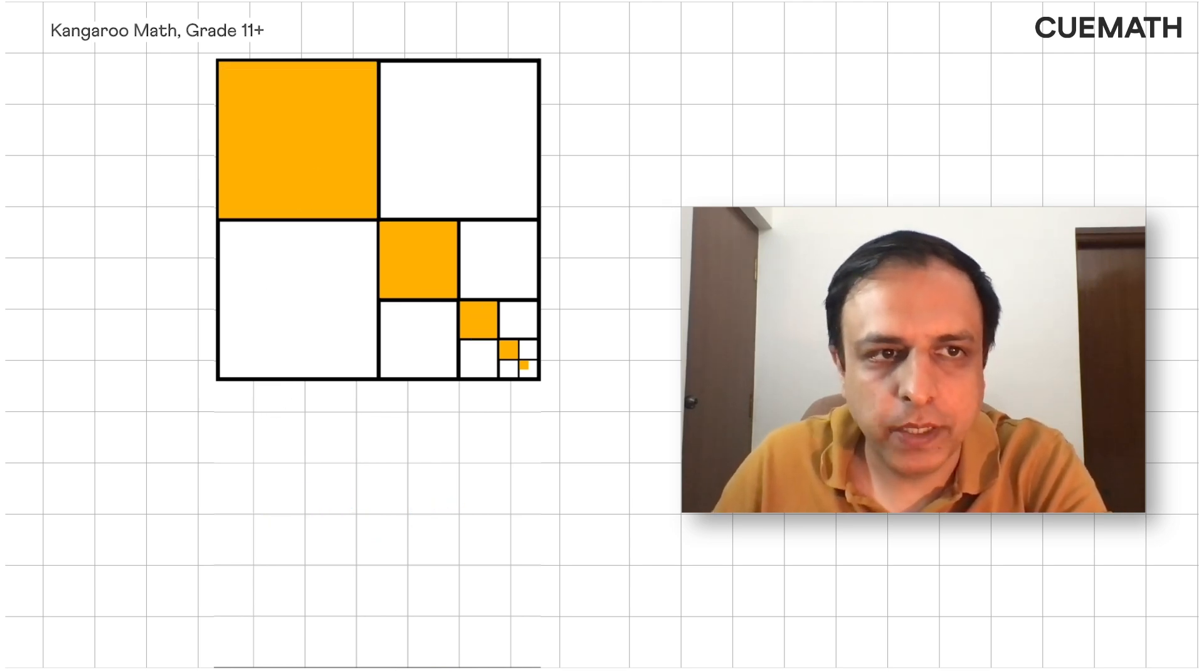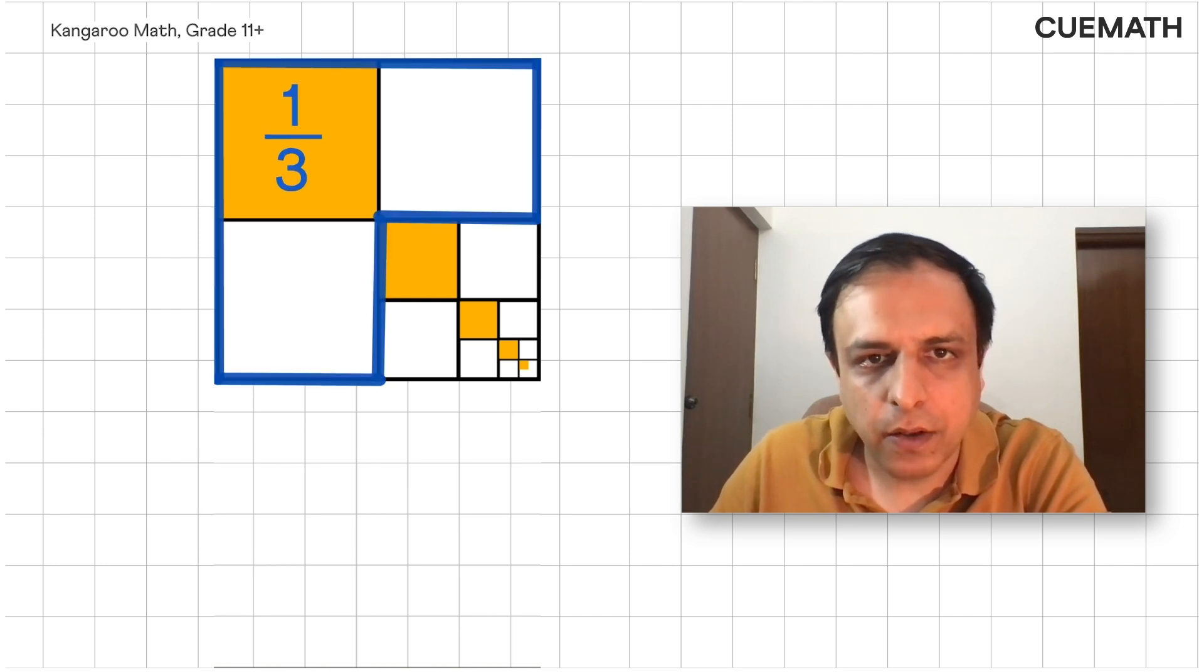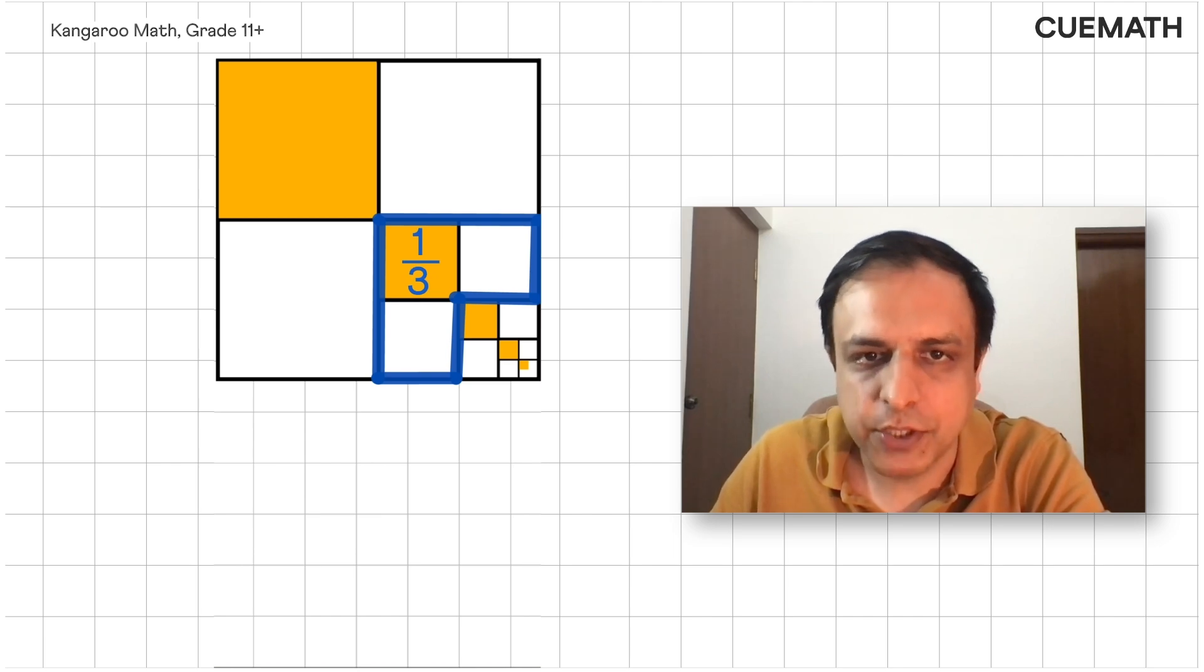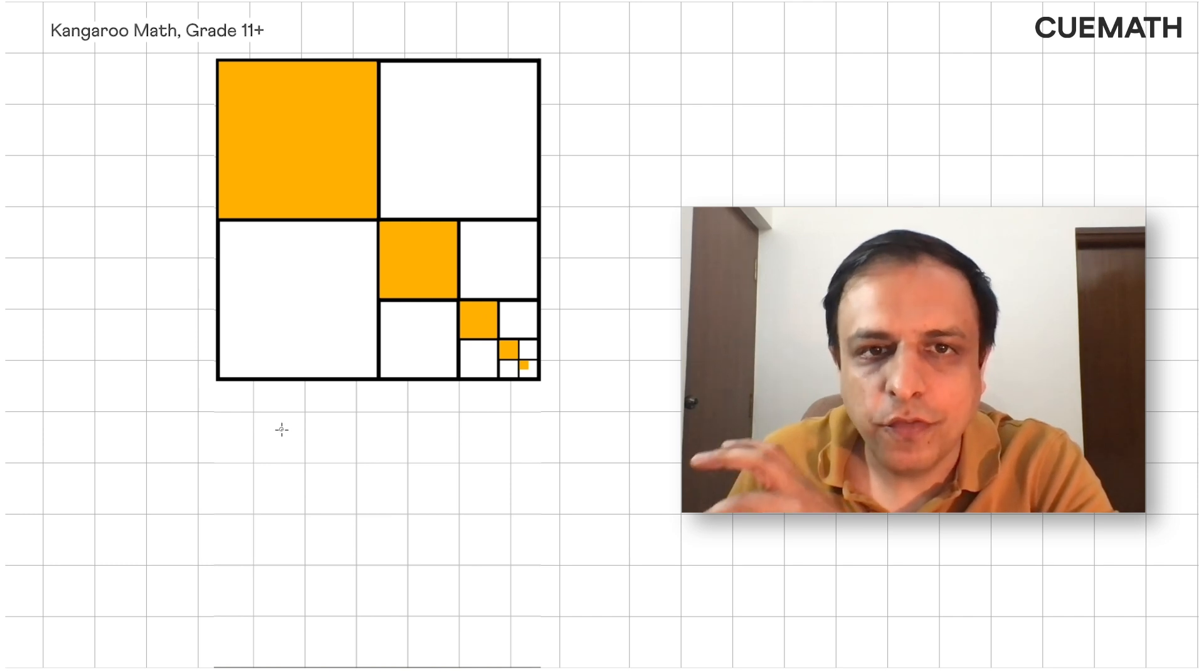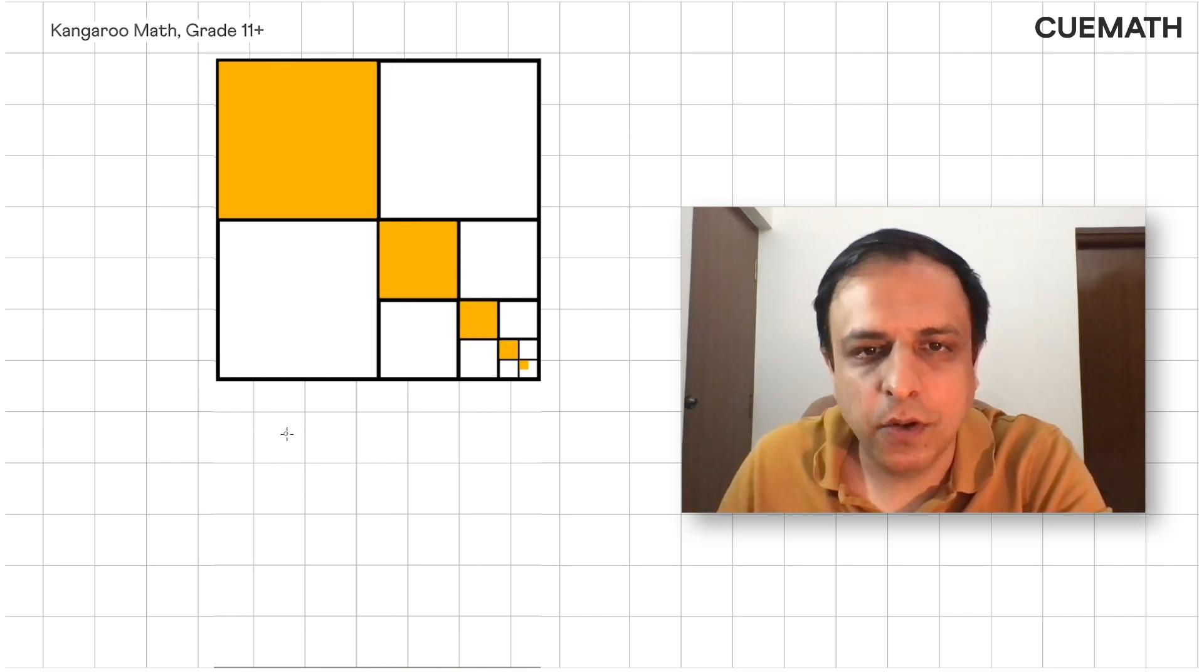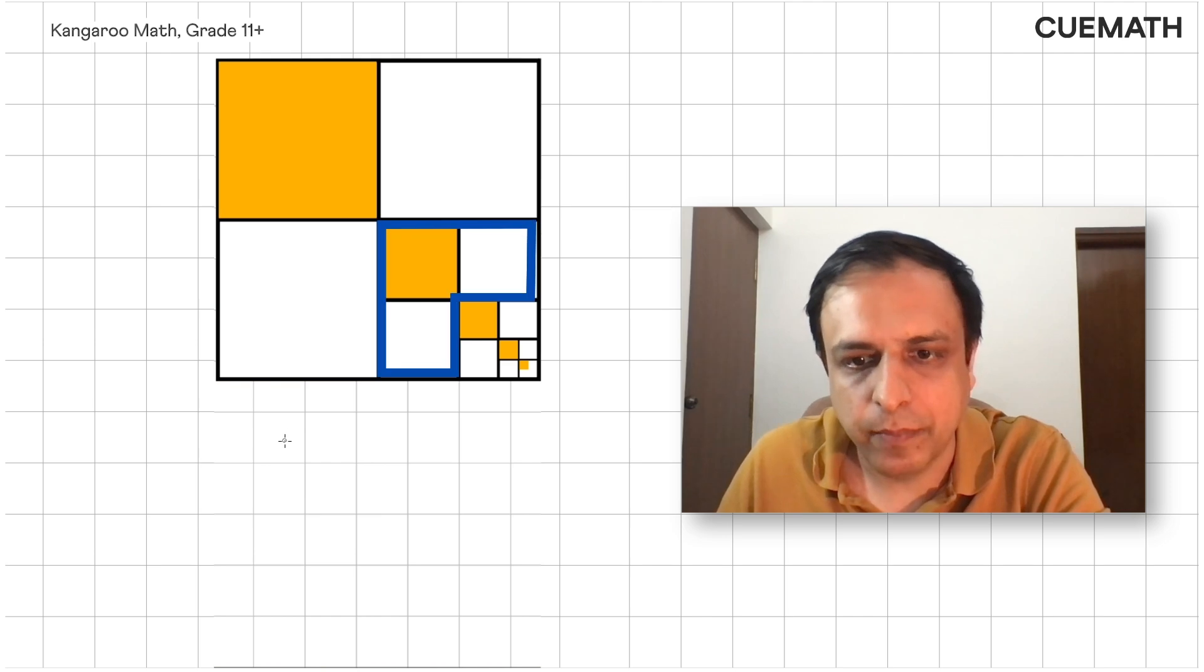The first yellow square is one-third in area of this L-shaped region. The second yellow square is one-third in area of this L-shaped region. The third yellow square is one-third in area of this L-shaped region and so on. So the sum of all the yellow squares will simply be one-third of the sum of all the L-shaped regions.